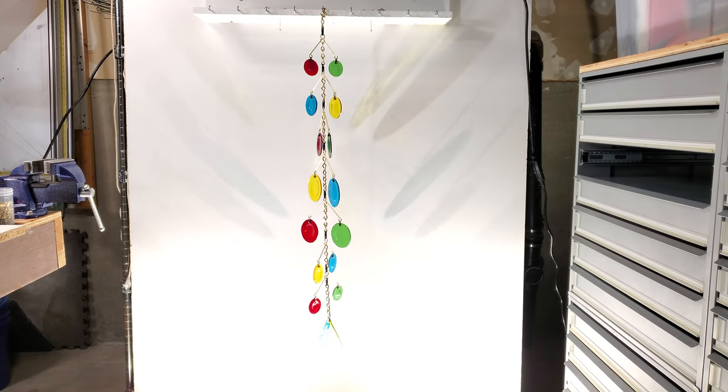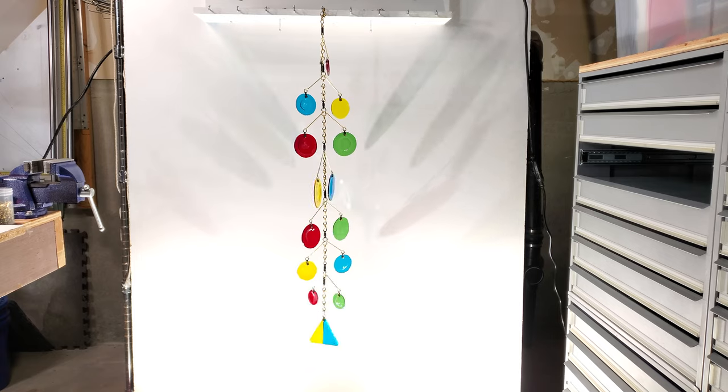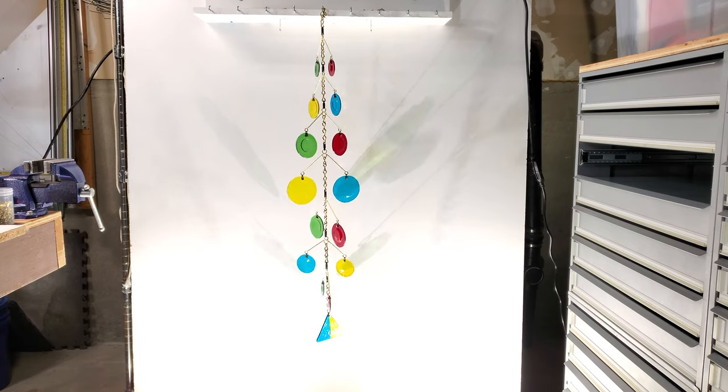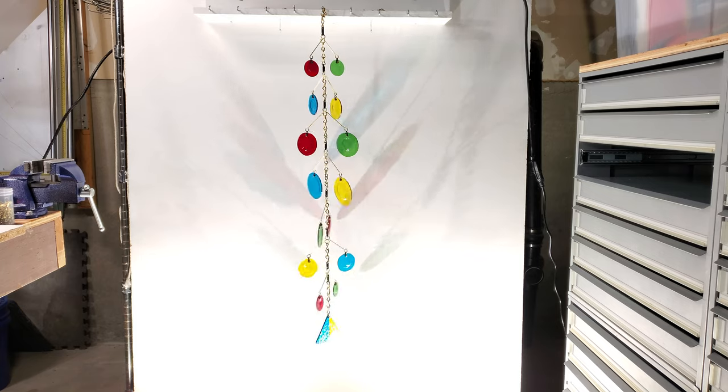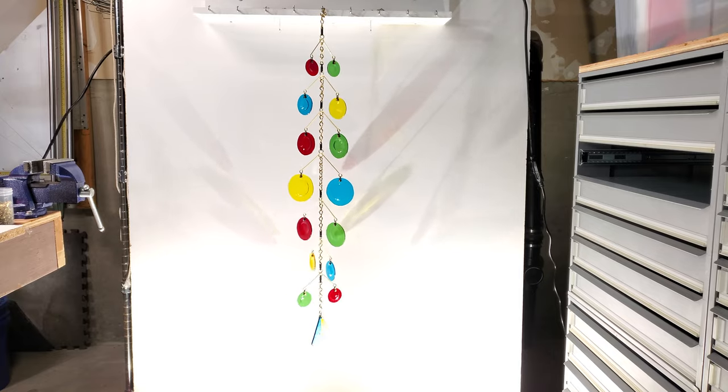For assembly, I started at the top and worked my way down connecting the respective lengths of chain in the order I laid out in the prior segment. I then hung the glass on the mobile arms. After everything was hanging, I closed all the chain lengths and loops with my grousing pliers.